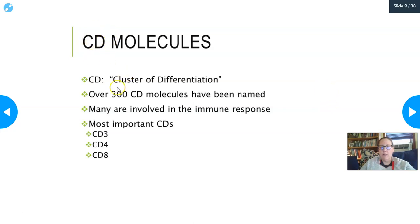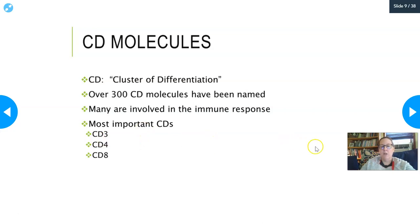On the surface of white cells there are CD molecules — cluster of differentiation markers. There are over 300 different CD molecules named, and many are involved in the immune response. The most important CDs on lymphocytes are CD3, CD4, and CD8. CD4 cells are T helper cells, CD8 are cytotoxic T cells, and CD3 are gamma delta T cells. Even though lymphocytes look identical, surface markers give them different identities and jobs.